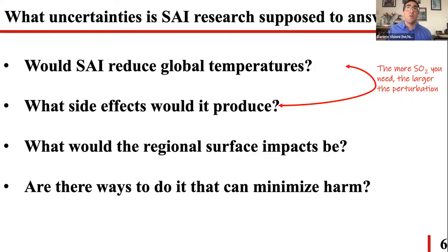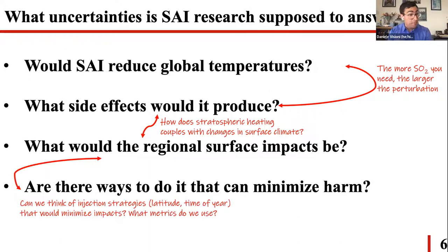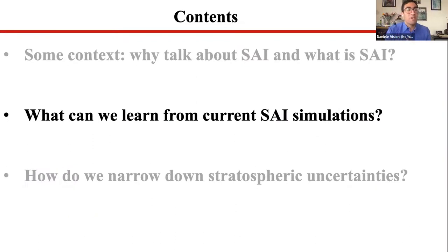We need to know roughly how much SO2 we would need to understand how much aerosol would be in the stratosphere, how much the stratosphere would warm, and what the side effects would be. The side effects couple to the regional surface impacts because the stratosphere and troposphere are not disconnected. How does stratospheric heating couple with changes in surface climate? And can we think of injection strategies that minimize impacts? To do that, we really need strong understanding of both the stratospheric side effects and the regional surface impacts.